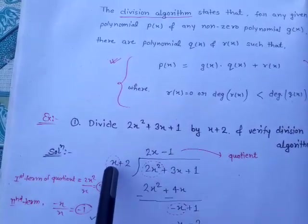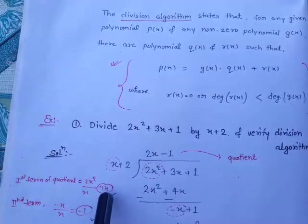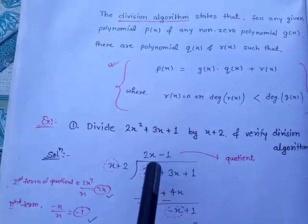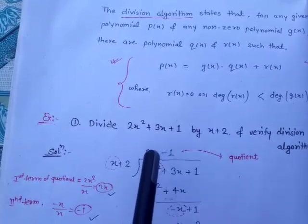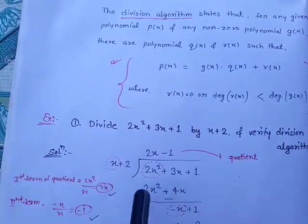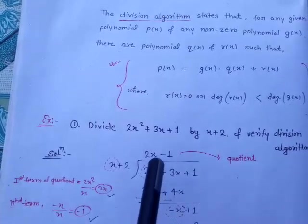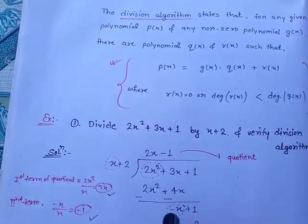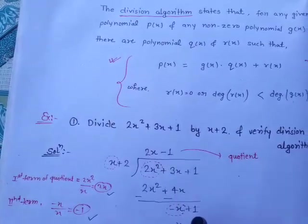See the first term of both divisor and dividend: 2x² and x. Dividing 2x² by x we get 2x, so the first quotient term is 2x. Multiply 2x by (x + 2) to get 2x² + 4x. Reversing the sign (plus to minus), 2x² cancels out, and 3x − 4x gives −x. Bring down +1.